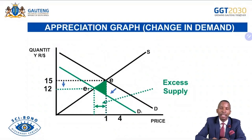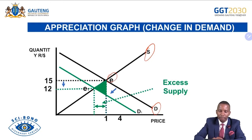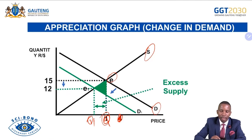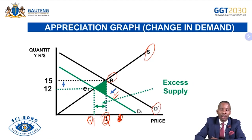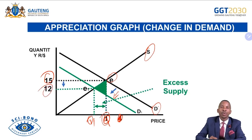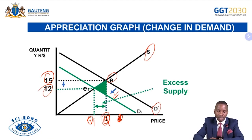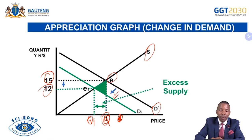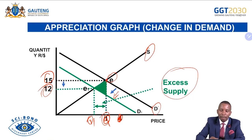For appreciation due to a change in demand: demand for rand declines from D to D1 while supply remains unchanged. As demand for rand declines, the rand is no longer under pressure in the foreign exchange market. The quantity decreases from Q to Q1, and the value of rand appreciates from 15 to 12 — we can now afford a dollar with less rand than before. This is still excess supply because supply remains higher than demand — that is appreciation of the currency due to change in demand.